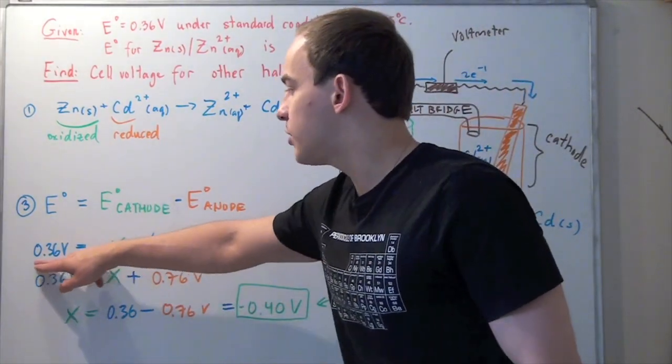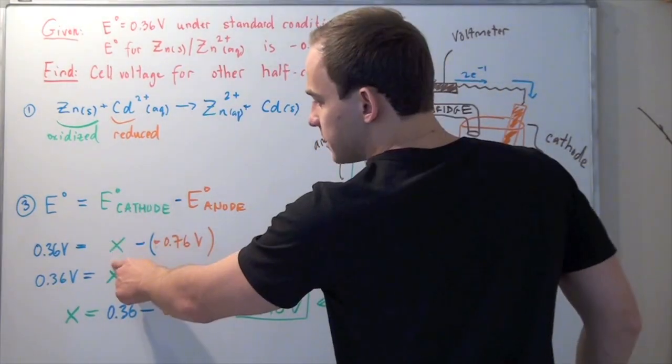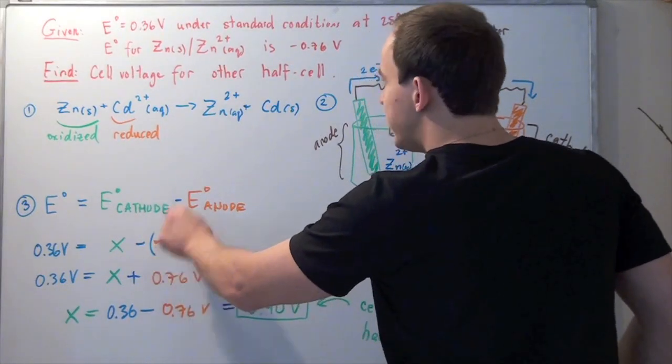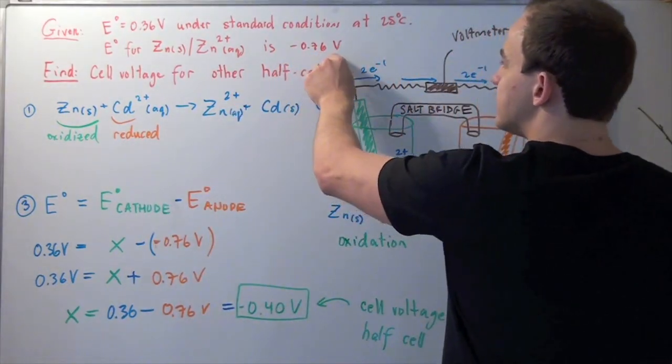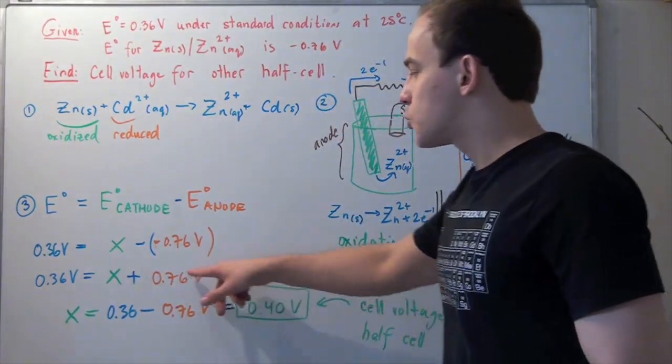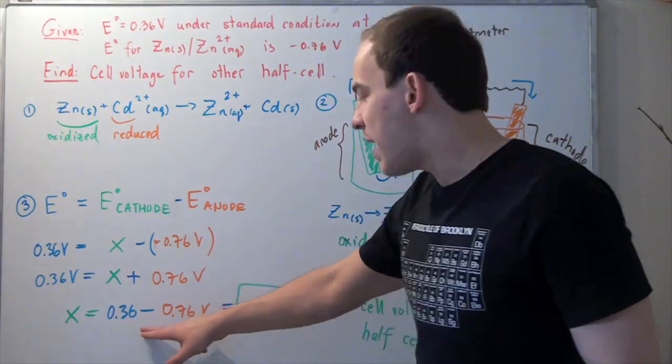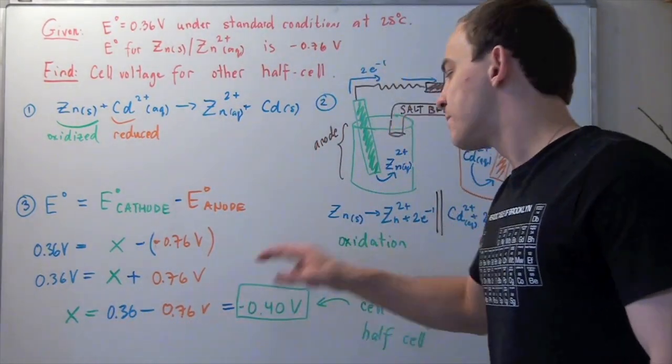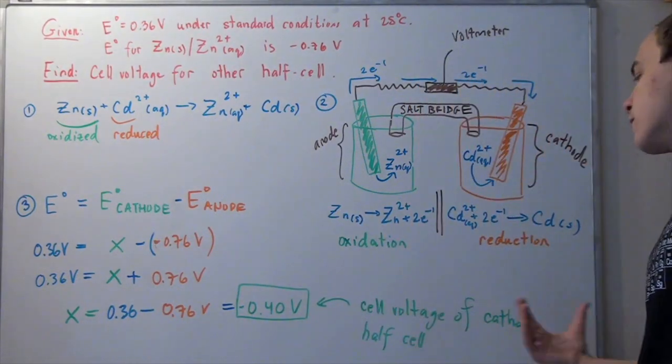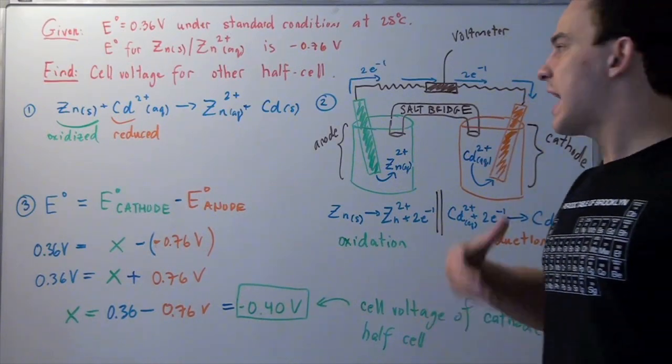We know 0.36 volts, which is given by the voltmeter. We let the unknown be x minus—now in parentheses—negative 0.76 volts. Negative and negative becomes a positive. Then we subtract both sides by 0.76, and we get x equals 0.36 minus 0.76 volts, which gives us negative 0.40 volts. This is our cell voltage for the cathode cell, for the cadmium reduction reaction.